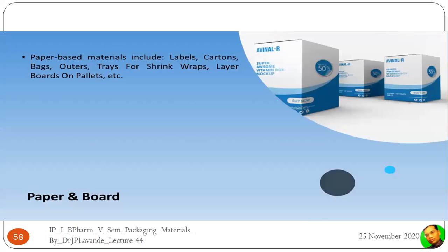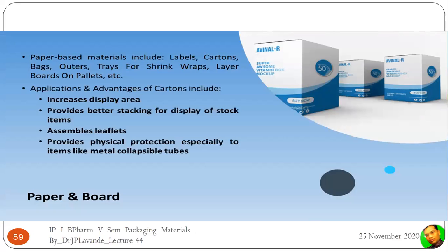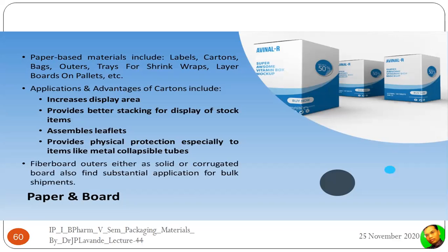Paper and boards form the secondary packaging. Paperboard materials include labels, cartons, bags, outers, trays, shape wraps, and layer boards on pallets. Advantages of cartons include increased display area, better stacking of the product, proper insertion of the leaflet, and physical protection especially for items like metal collapsible tubes — preventing them from being crimped or collapsed. Fibreboards — either solid or corrugated — also find substantial application for bulk shipment.